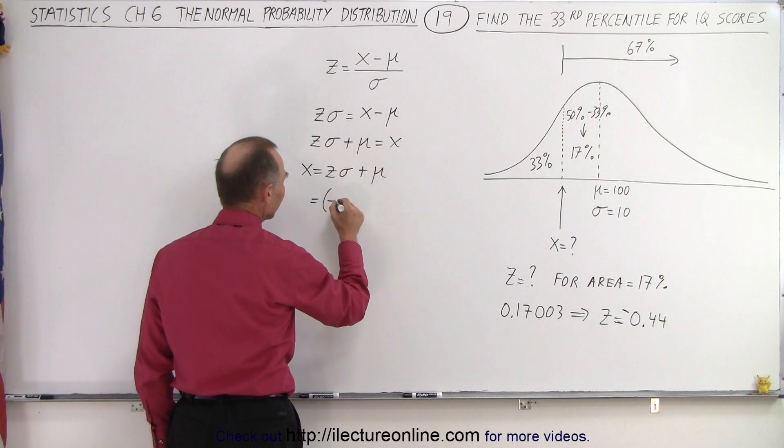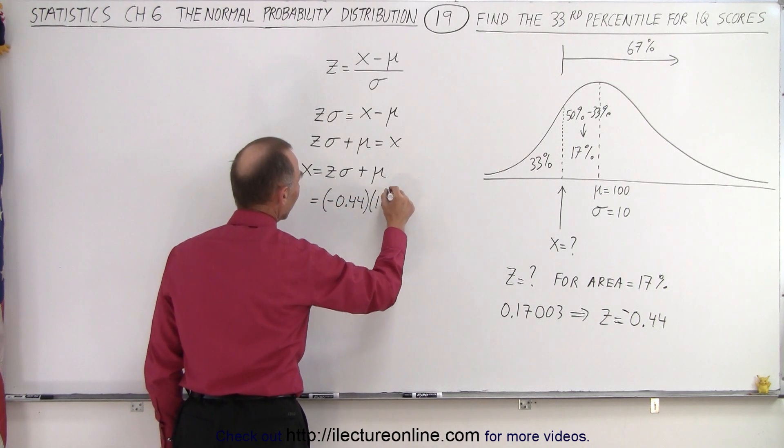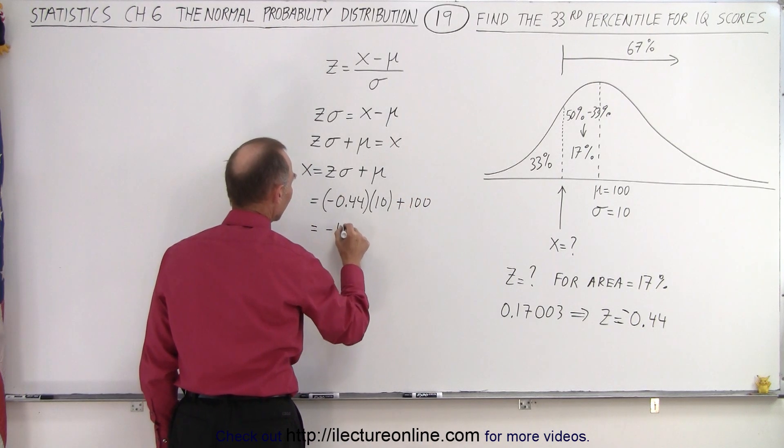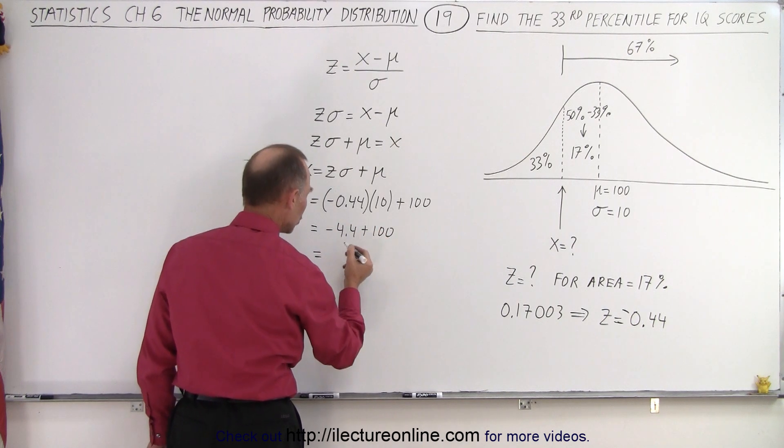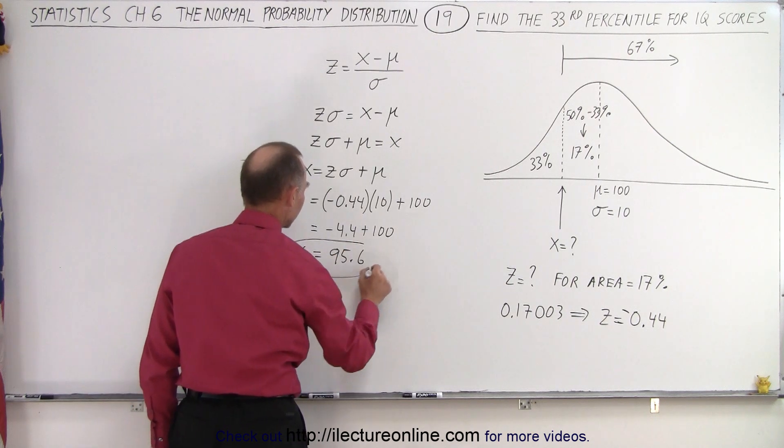In this case, Z is negative 0.44, sigma is 10, and the mean is 100, so this equals negative 4.4 plus 100, or that's equal to 95.6. X equals 95.6.